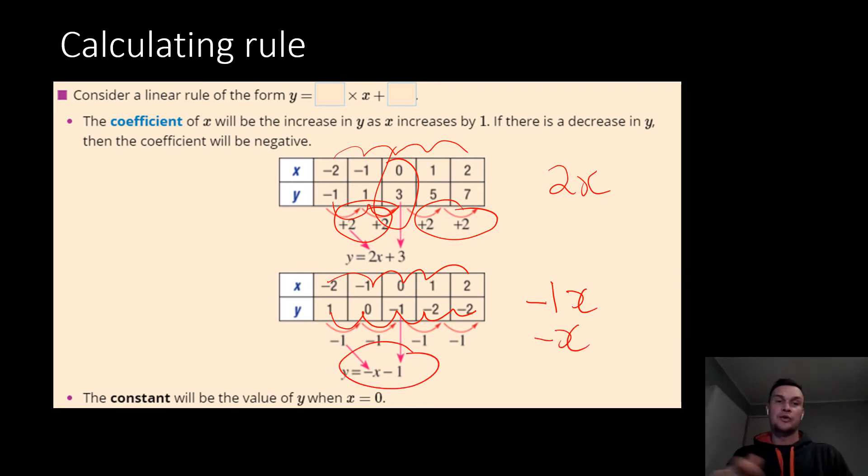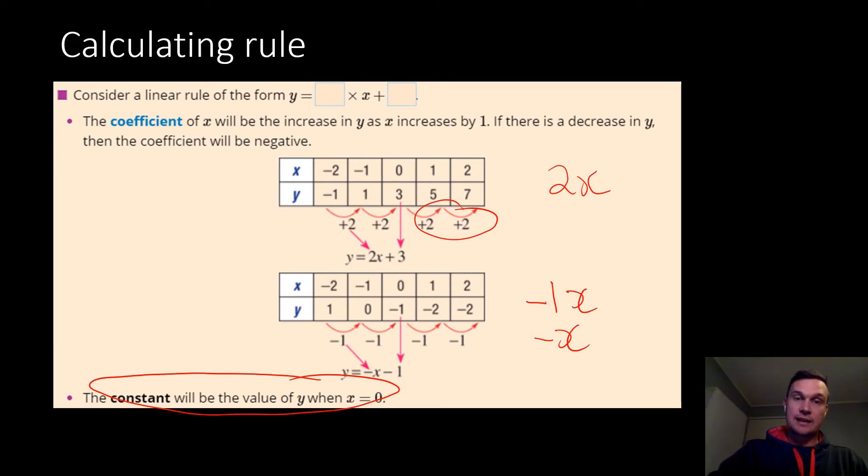The other way to find the constant - you do that by looking at either how the y increases or decreases. To find the constant, what you do is you just look for the 0 and you see what is there. So in these cases here, we look at the 0, and we just find what the number is there. In this case, it is a positive 3, so that means it is 2x plus 3. In this instance here, you'll see it's a negative 1, so therefore it's negative x minus 1.